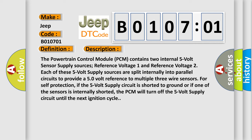And now this is a short description of this DTC code. The powertrain control module PCM contains two internal 5-volt sensor supply sources: reference voltage 1 and reference voltage 2. Each of these 5-volt supply sources are split internally into parallel circuits to provide a 5-volt reference to multiple three-wire sensors. For self-protection, if the 5-volt supply circuit is shorted to ground or if one of the sensors is internally shorted, the PCM will turn off the 5-volt supply circuit until the next ignition cycle.